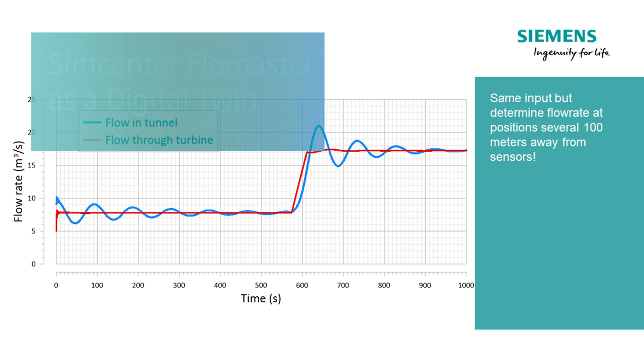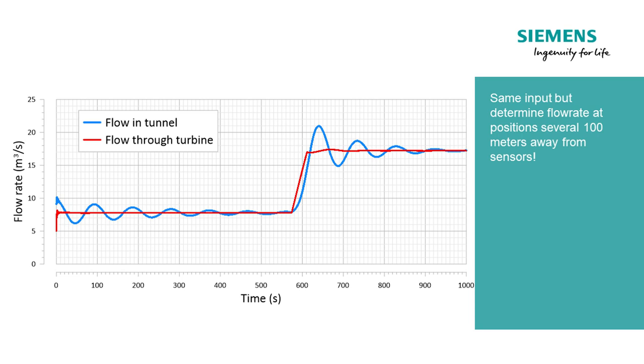In that way we can actually provide information about the flow oscillations in the tunnel system, and those flow oscillations are the main reason for lifting and transporting rocks. Using Simcenter Flowmaster, we provide the operator a good measure for what type of transients are allowed during operation, and we can provide answers on how to minimize flow oscillations — perhaps by adjusting the opening ratio stepwise.